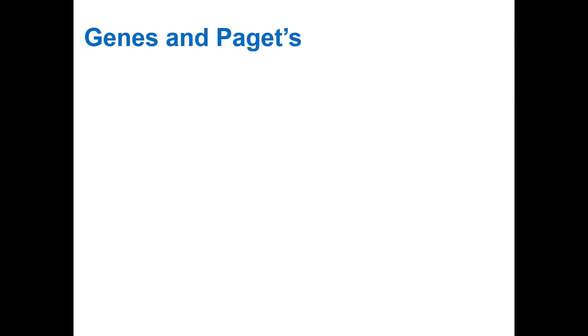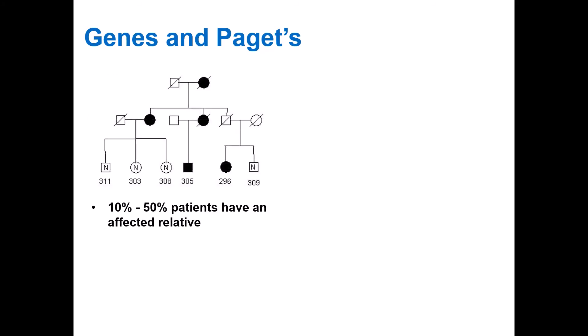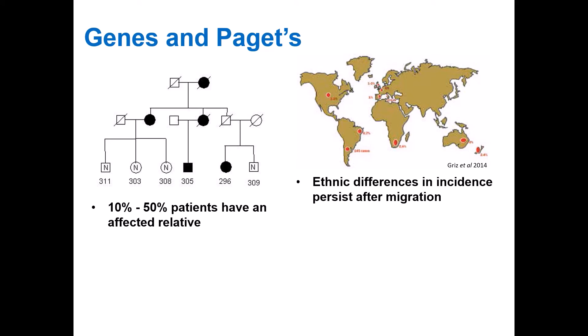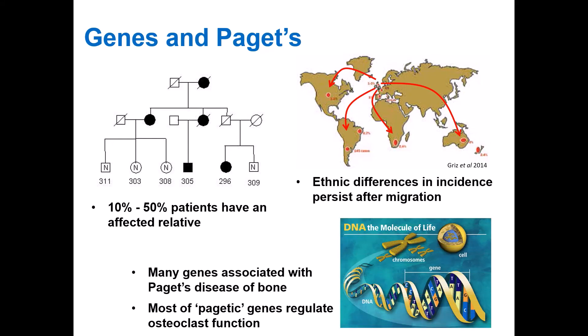Now we will move on to the genetic factors. Family history is common — this is an example of a family pedigree where Paget's was passed on from the grandmother through her children to her grandchildren, with affected individuals coloured in black. It's been estimated that between 10 to 50% of patients may have an affected relative. Ethnic differences in incidence persist after migration, most evident in the Americas, South Africa, Australia, and New Zealand, where incidence is higher in descendants of Anglo-Saxons compared to the indigenous population. Many genes have been associated with Paget's disease, and most of those genes regulate osteoclast function.